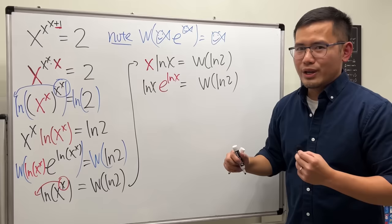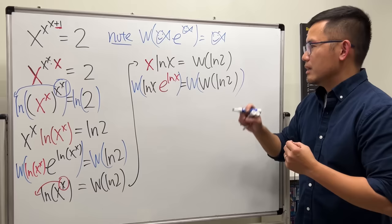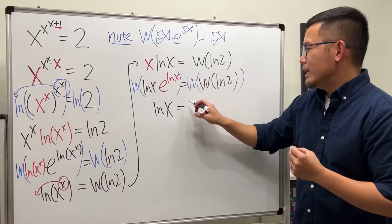Once again, we are ready to go. Take the Lambert W function here, and also take the Lambert W function here. On the left-hand side, we just have ln x. And on the right-hand side, we have the Lambert W function of the Lambert W function of ln 2.